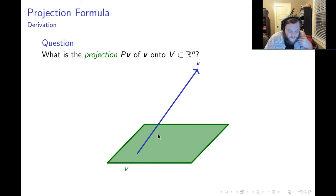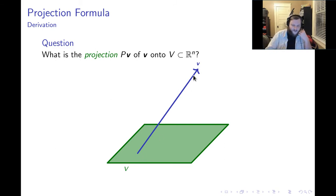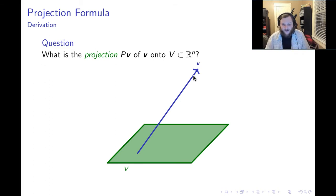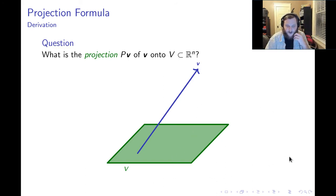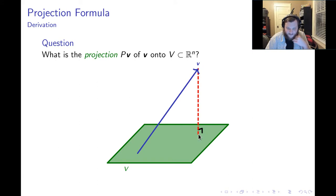Here we have this vector in blue, called little v, and I've tried to draw this in such a way where it's apparent that this vector is not in this space, big V. So the question is, what would it even mean to project this vector onto the space? Well, what we said before was that we should drop an orthogonal ray from the tip of the vector down to the space, and this defines a vector in the space called the projection PV.